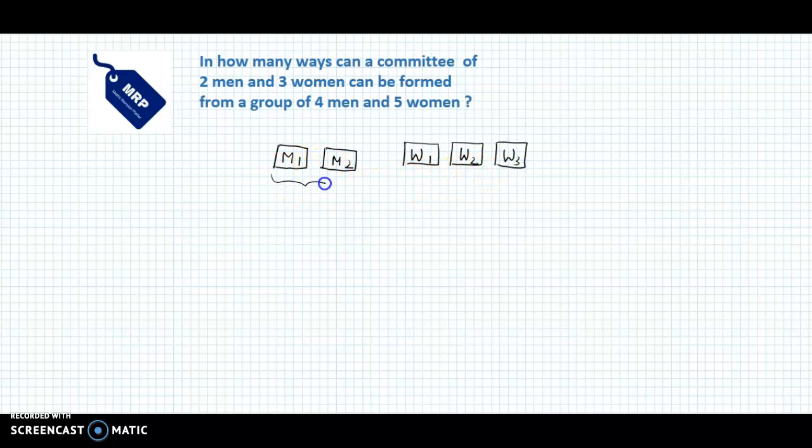Now these 2 men could be selected from the 4 men because in all we have 4 men and we need to select only 2. So that would be done in 4C2 ways.